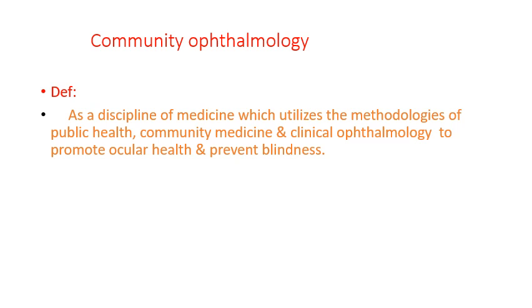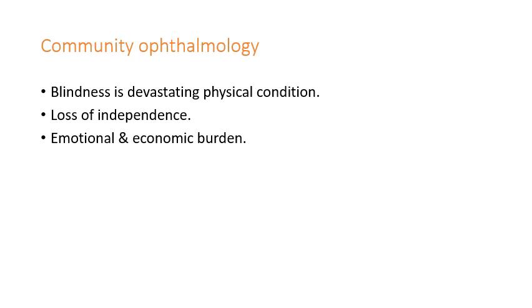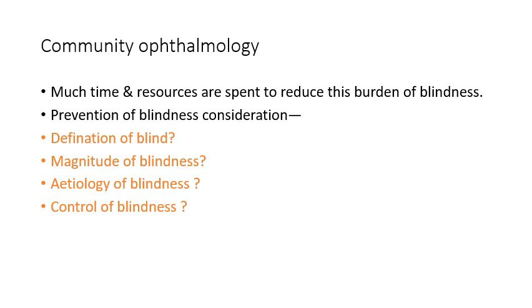Community ophthalmology is a discipline of medicine which utilizes the methodologies of public health, community medicine and clinical ophthalmology to promote ocular health and prevent blindness. Blindness is a devastating physical condition — there is loss of independence, emotional and economic burden to the family, and what is called lost man-hours. These lost man-hours contribute to the economy of a country. Much time and resources are spent to reduce this burden of blindness. In the prevention of blindness in community ophthalmology, you have to think about: the definition of blindness, the magnitude of blindness, the etiology of blindness, and how to control blindness.